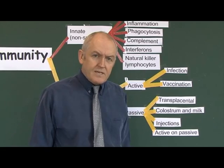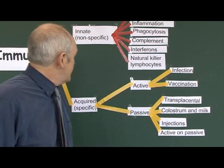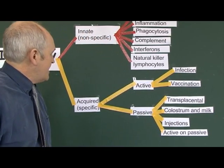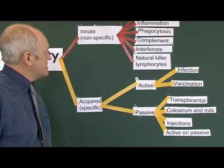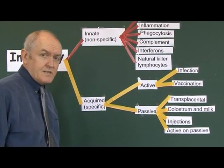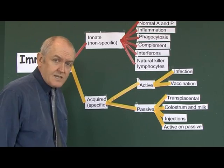So that's immunity — this is the mind map overview of it, and we're going to look at each of these areas in more detail now.